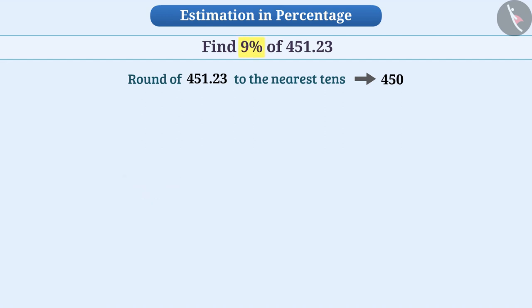Since we have to find 9%, we can do 450 multiplied by 9 by 100. But this can be done in an easier way. First, we will find 10% of 450. 10% of 450 is 45.